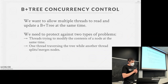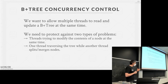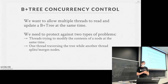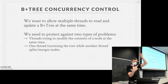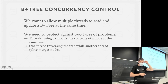Now let's make it harder — B+ trees. We want multiple threads reading and updating the tree simultaneously. Two problems to prevent: threads writing to the same node at the same time (easy), and a thread traversing the tree while another makes structural changes (splits/merges) lower in the tree, potentially invalidating pointers the first thread is about to follow.